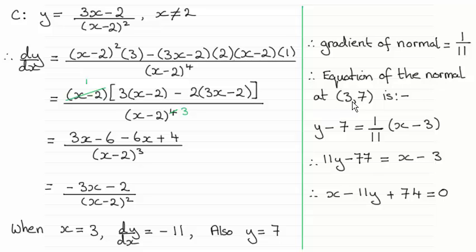So the equation of the normal at the point (3, 7) is, I'm using the form y minus y1 equals m times x minus x1, where x1 is 3, y1 is 7, and the gradient m is 1 over 11. Just multiply through by 11 now, you get this, and rearrange, and you get your answer. Okay?